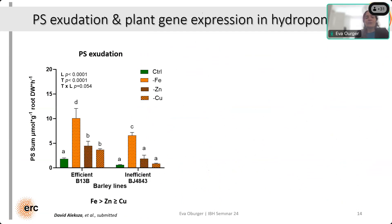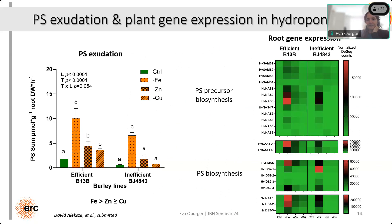Here is what we found. This graph shows the phytosiderophore exudation rates per gram dry weight per hour from our exudation analysis. You can see that clearly iron is the strongest trigger for the phytosiderophore pathway, followed by zinc, and then also by copper to a slightly weaker extent. Another important thing is that the phytosiderophore pathway expression is generally stronger in the efficient line, irrespective of treatment. Our exudation data was nicely supported by the gene expression data — the phytosiderophore precursor biosynthesis genes always show the same trend: strongest expression under iron deficiency, followed by zinc and then copper, and stronger in the efficient line.